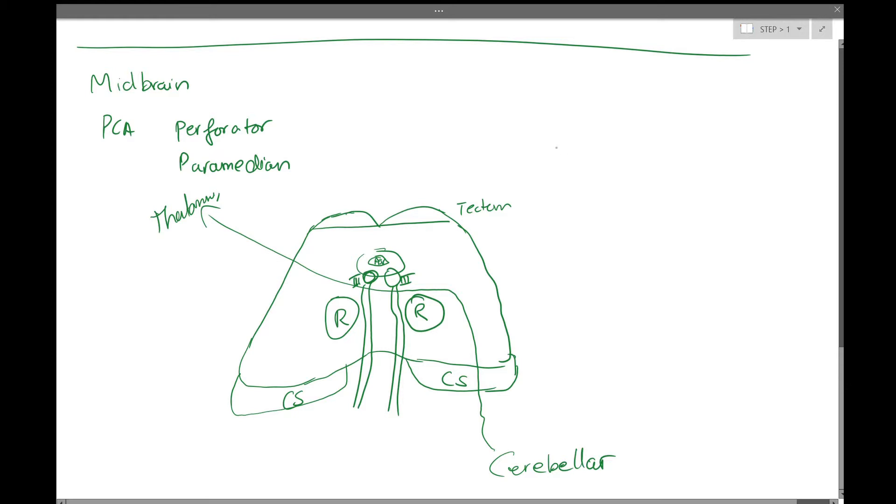And so the first one we're going to talk about is Paranod's syndrome. And Paranod's is a lesion of the tectum, and the lesion of the tectum will cause vertical gaze palsy.